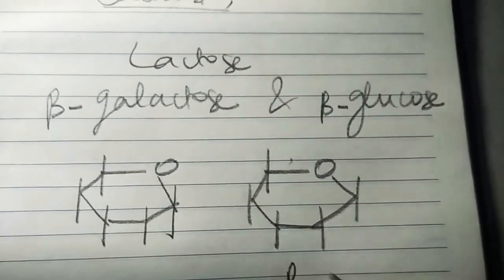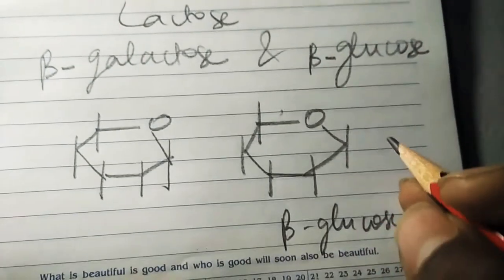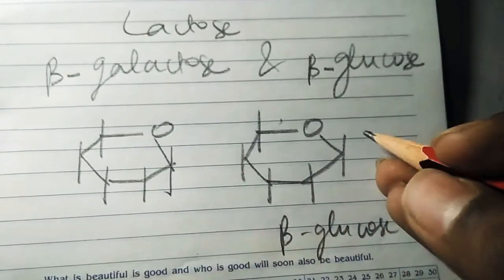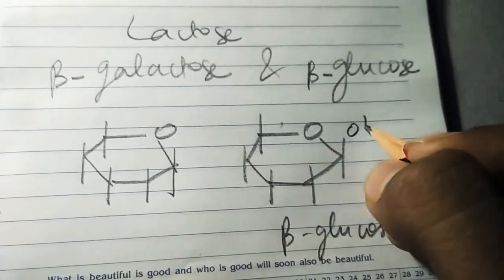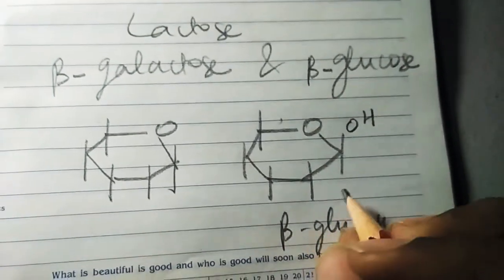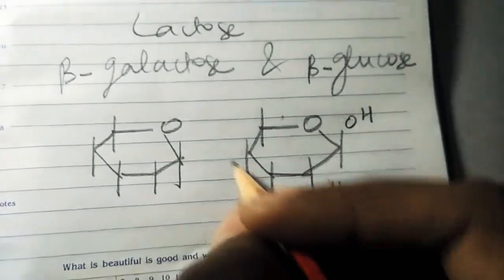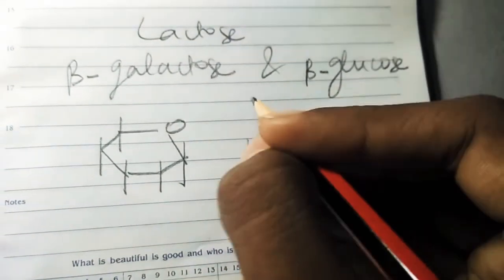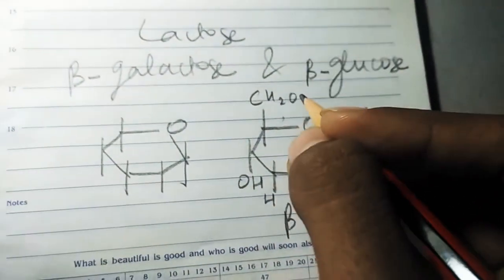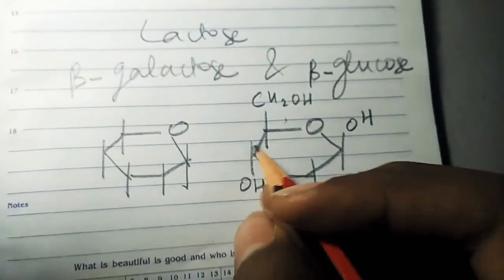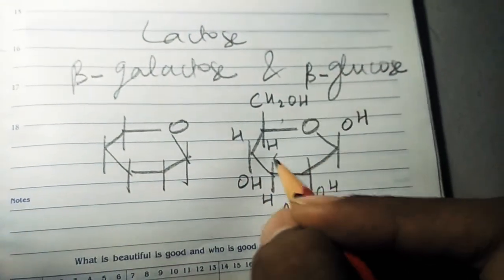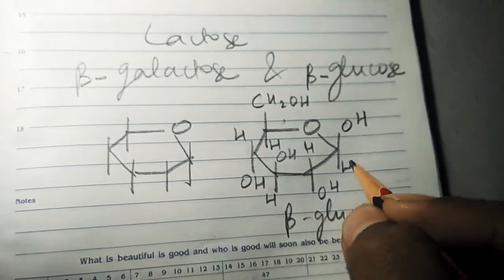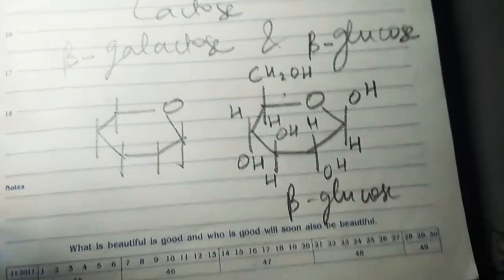For beta-glucose, the OH is present at the upper side, so it is OH here, OH here, H and here OH, CH2OH here, H here, OH here, H and finally here H.